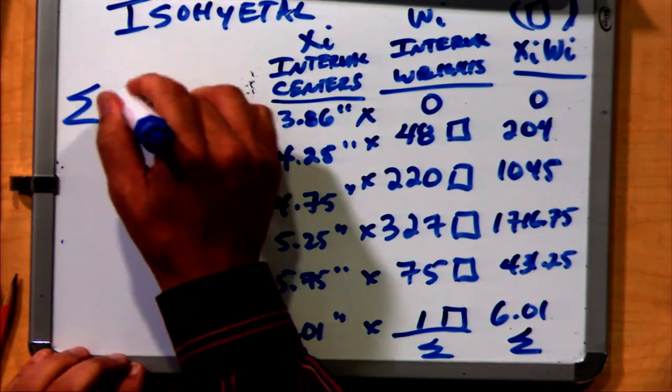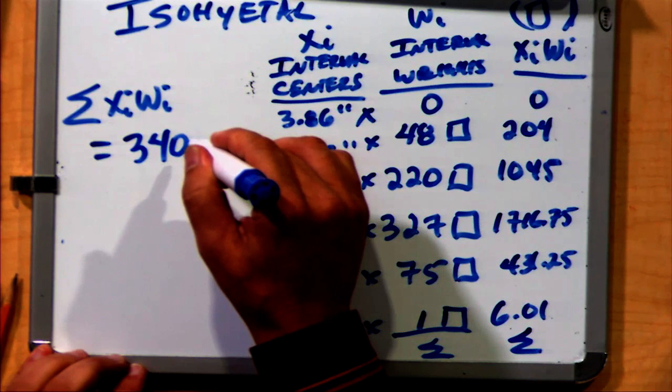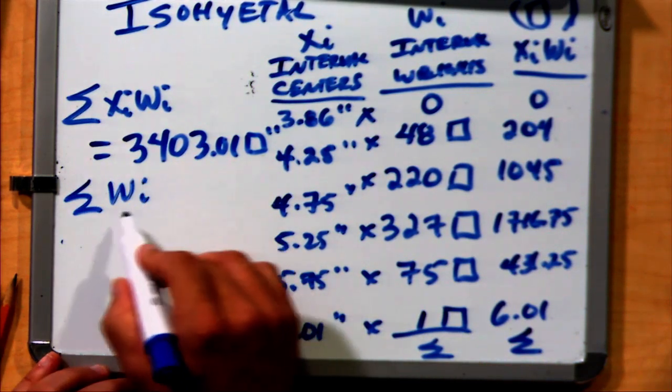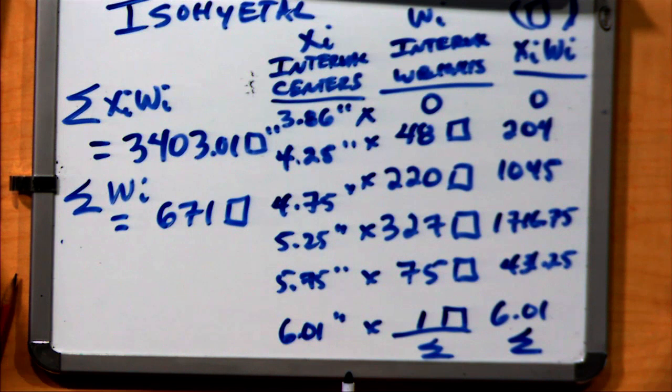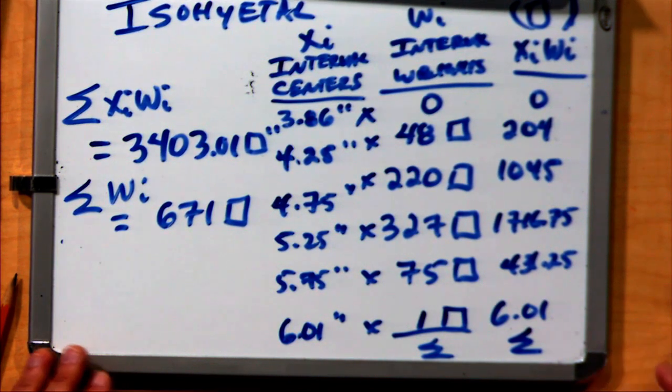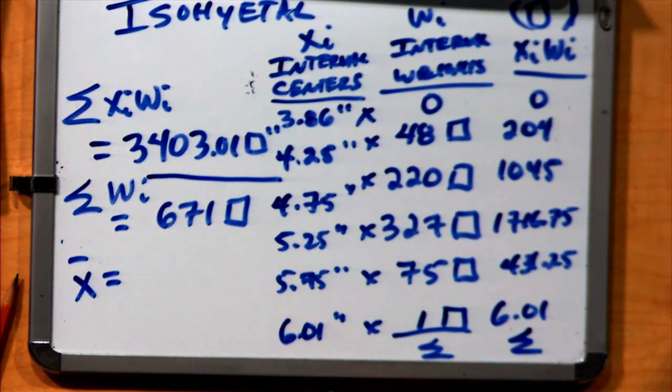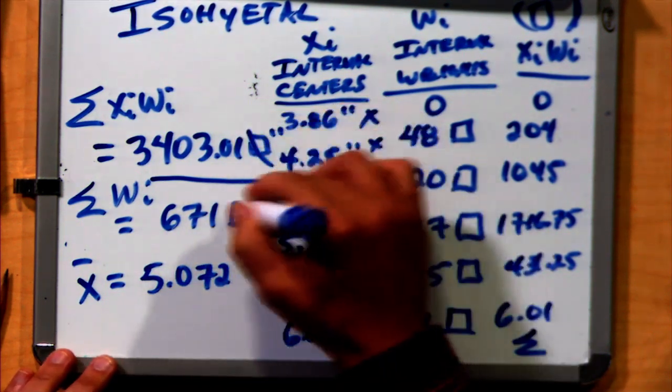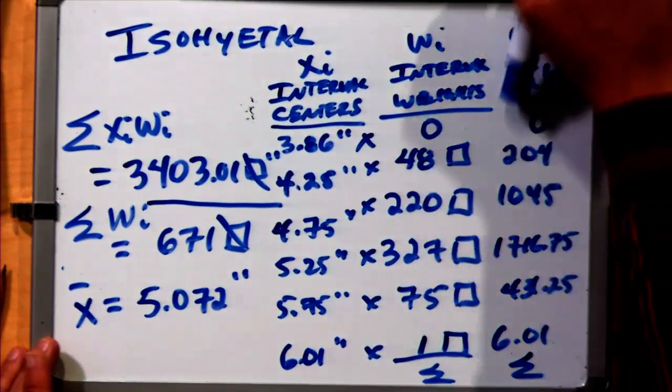The sum of the weighted products is 3,403.01 box inches. The sum of all the weights is 671 boxes. Notice both methods had 671 boxes. Our mean value is 5.072 inches, where the boxes cancel out. So again, the area units you use are unimportant, because when you divide by the weights, they end up canceling out.